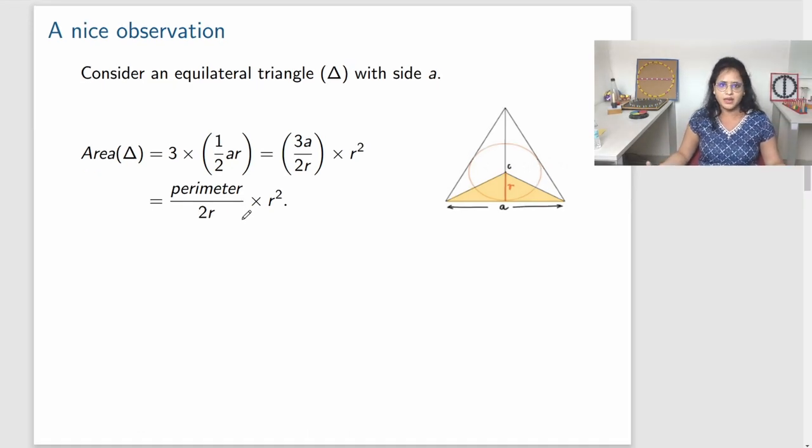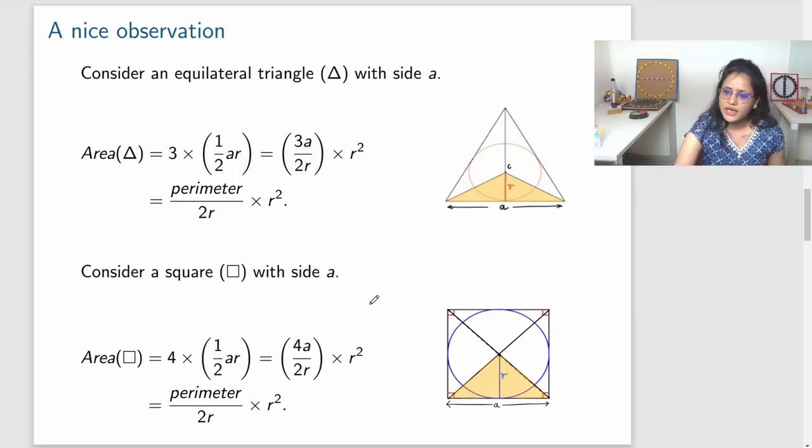What about if I take a square or a bigger polygon? We see that even if I take a square, if I calculate the area, I can do the same thing. I can divide the square in four little triangles with base A and height R. So we have area of a square is 4 times half AR and then I can write it again. Area of a square is again perimeter, because now the square has perimeter 4A. So area of a square is perimeter divided by 2R times R square. It's the same for the square also.